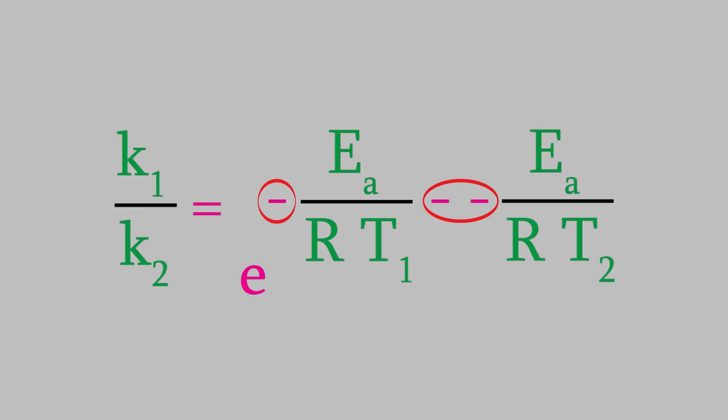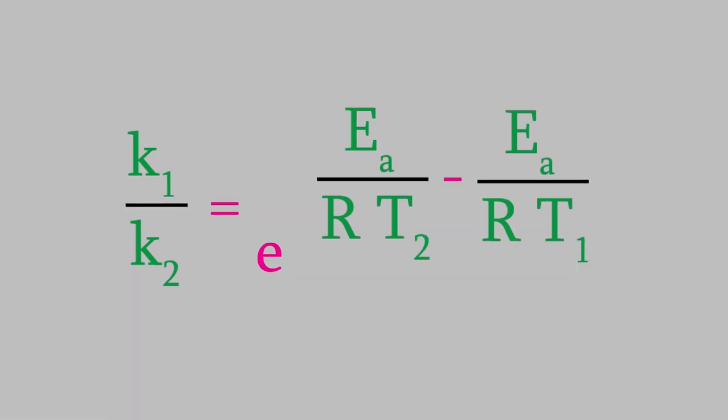All the minus signs here on the right are a little confusing, so let's rearrange that exponent just a little. Now, this equation is correct, but it's still kind of clunky. It would be simpler if we could get rid of the exponent.